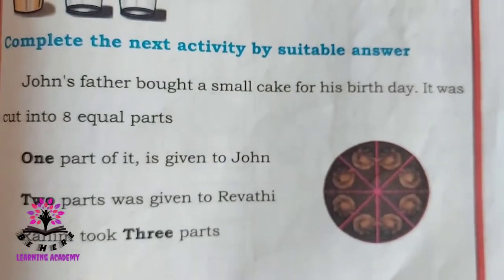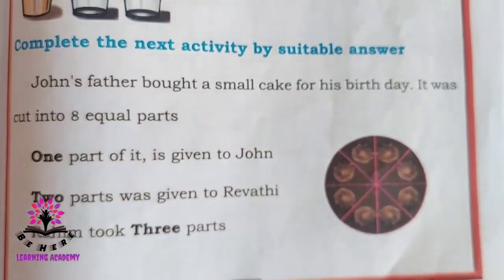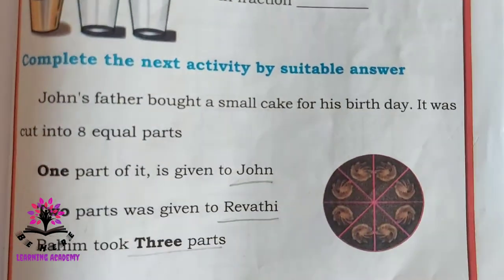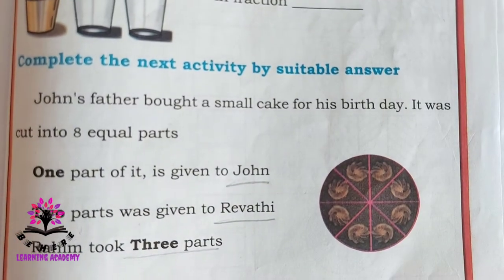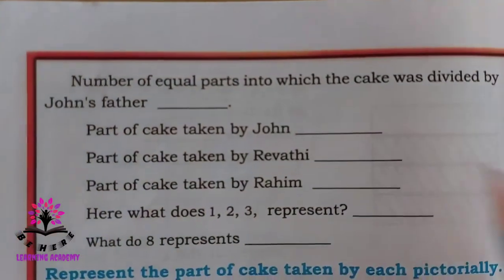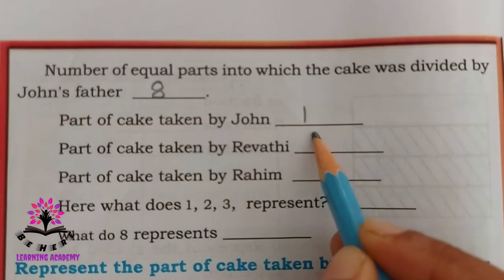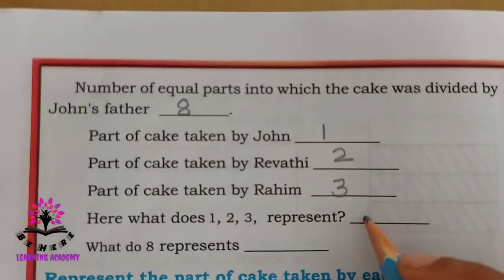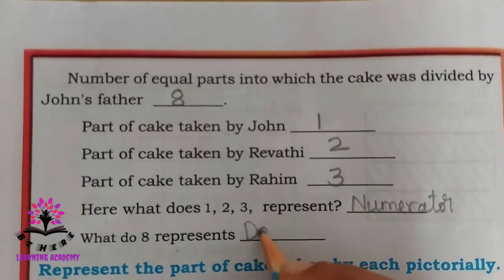John's father bought a small cake for his birthday. It was cut into eight equal parts. One part is given to John, two parts are given to Revathi, and Rahim took three parts. The number of equal parts the cake was divided into is eight. Parts taken by John is one, by Revathi is two, by Rahim is three. One, two, and three are the numerators, and eight is the denominator.